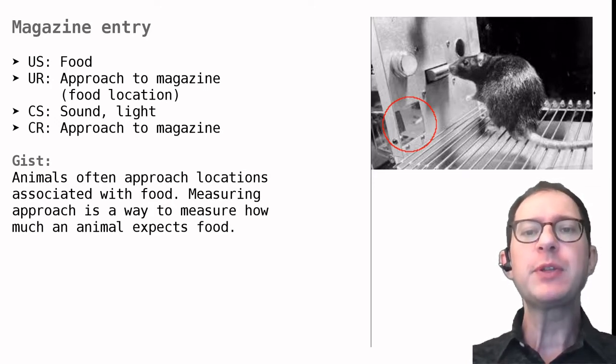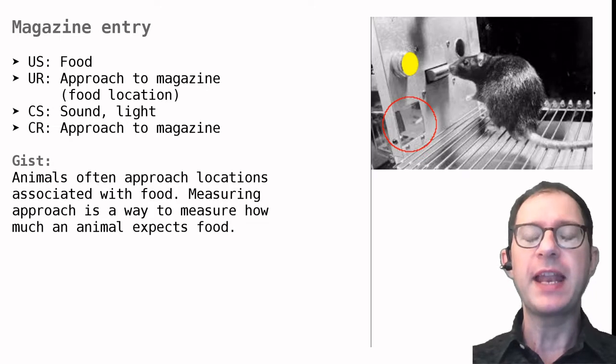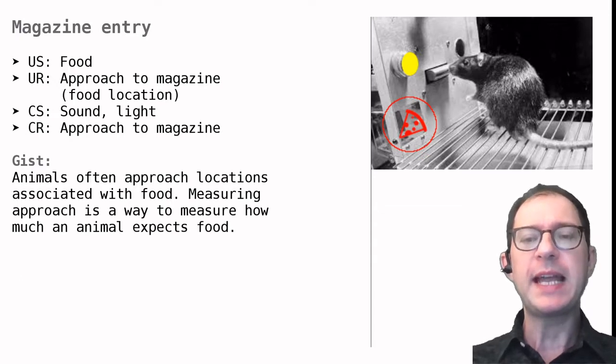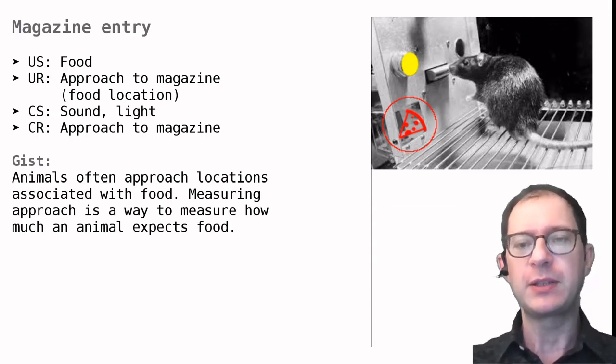Now suppose we do Pavlovian conditioning with the light and food. That is we turn on the light for some time, say 20 seconds, and then after the 20 seconds have passed we deliver food in the magazine. We do this many times as usual in Pavlovian conditioning: light, food, light, food, light, food and so on.